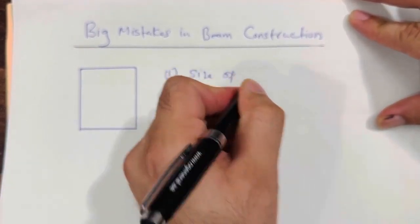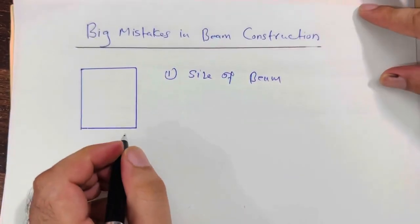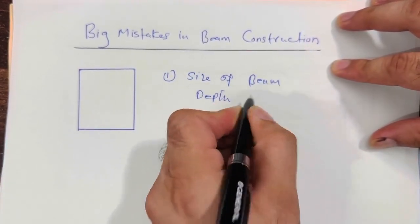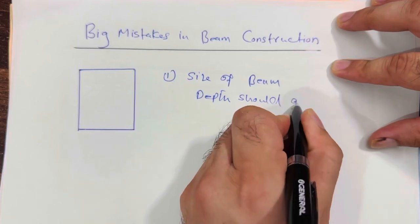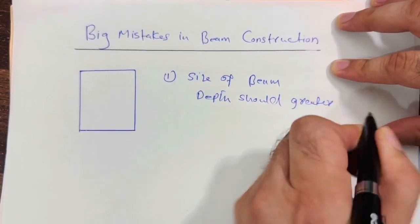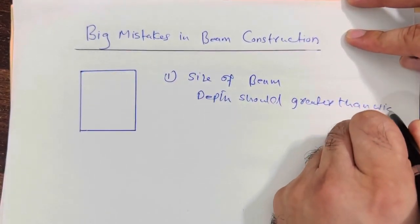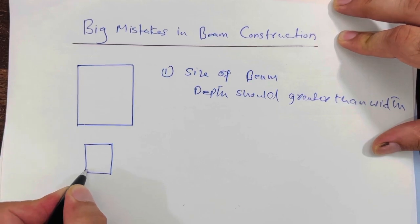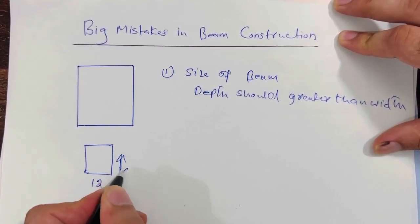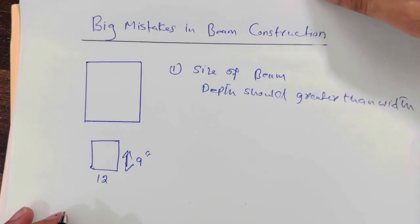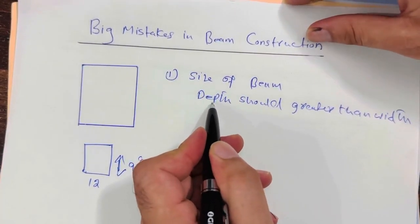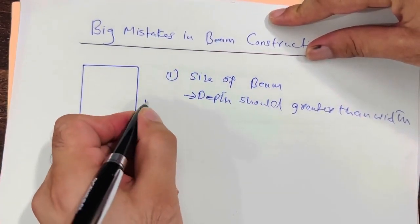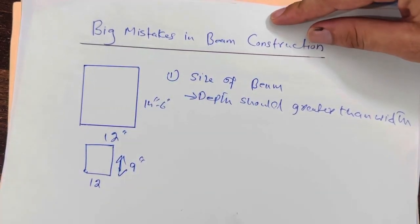The first big mistake is about the size of the beam. The depth should be greater than its width. For example, if the width is 12 inches and the depth is 9 inches, that is a big mistake. The correct way is: if the width is 12 inches, the depth should be 14 inches or 16 inches.